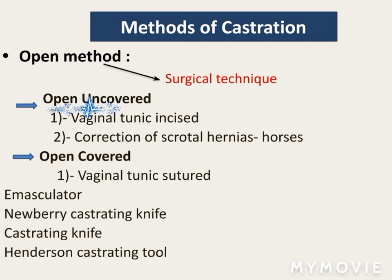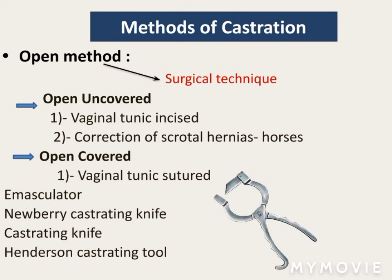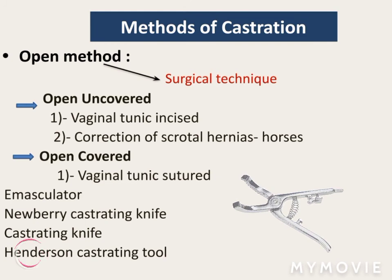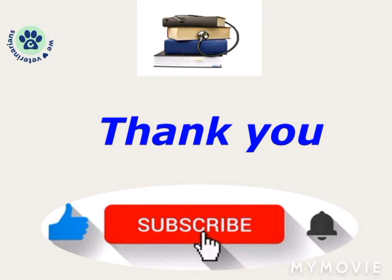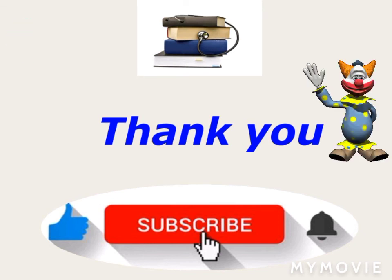Open and covered methods include vaginal tunic incised method and correction of scrotal hernias in horses. In open covered, only vaginal tunic is sutured. Equipment includes emasculator, Newbury castrating knife, castrating knife, or Henderson castrating tool, as shown in the slide. Did you know castration is also used to control street dog population? Thank you for watching — like, subscribe, and share.